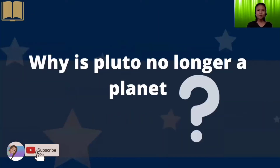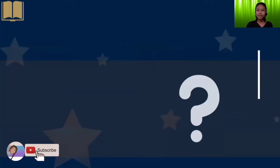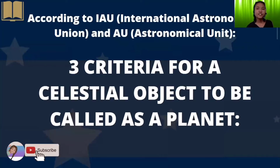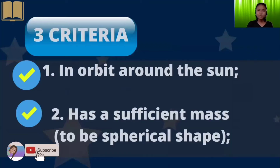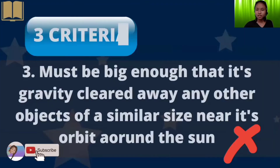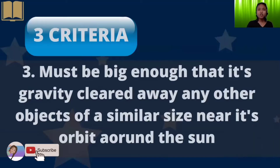So, the question is: why is Pluto no longer a planet? According to the IAU, or International Astronomical Union, there are three criteria for a celestial object to be called a planet. First, it must be in orbit around the sun. Second, it must have sufficient mass to be spherical in shape. These two criteria were complied by Pluto. But on the third criteria, Pluto did not pass — that it must be big enough that its gravity cleared away any other objects of a similar size near its orbit around the sun. That's why it is no longer called a planet.